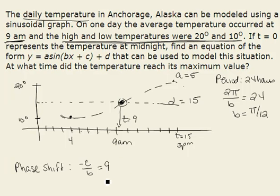Therefore we would know that c is equal to the opposite of 9 times b and we know that b is π over 12. So c is equal to the opposite of 9 times π over 12, both divisible by 3. We get c is equal to negative 3π over 4.